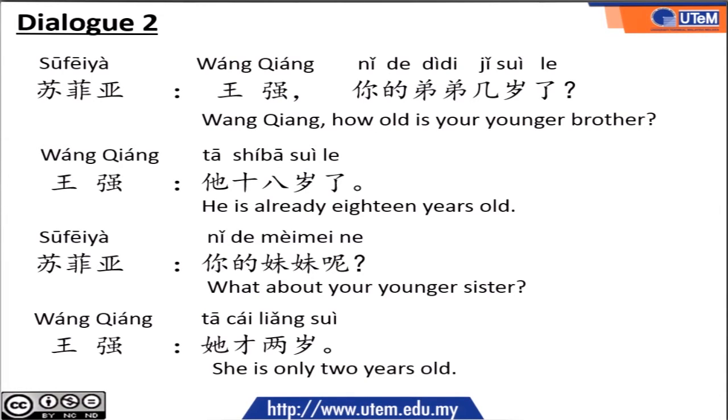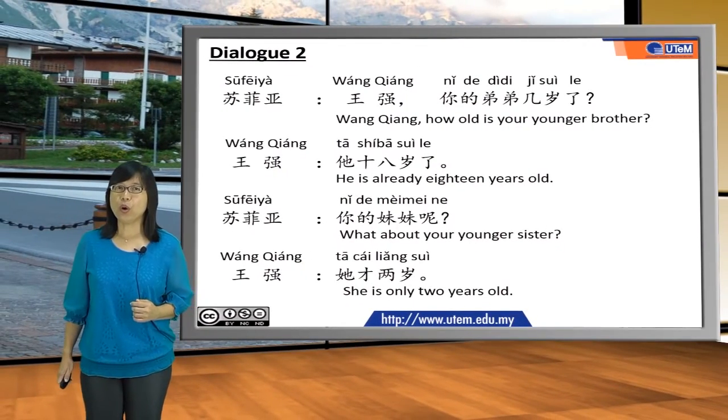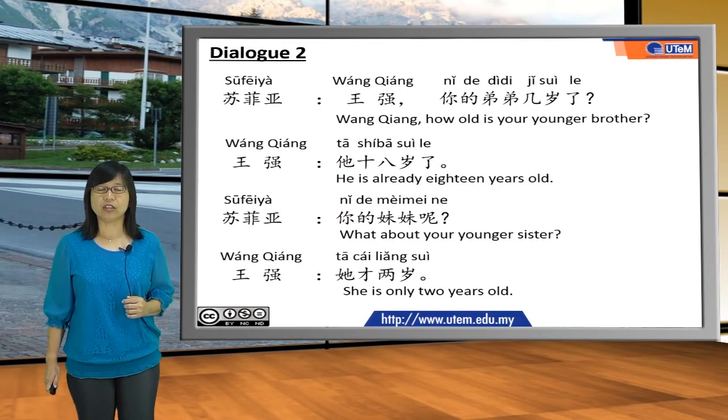Please note that when talking about age, we use 两, not 二.